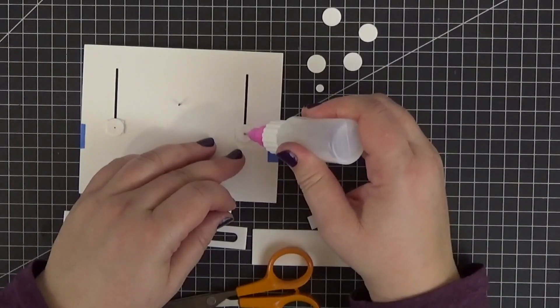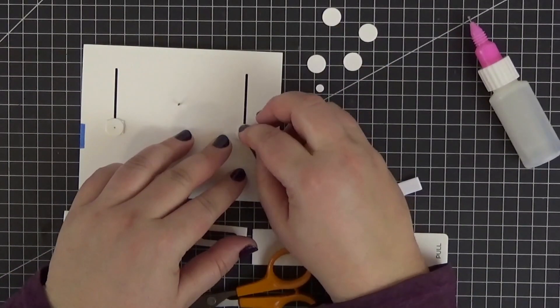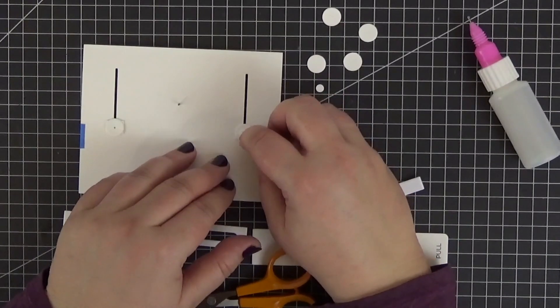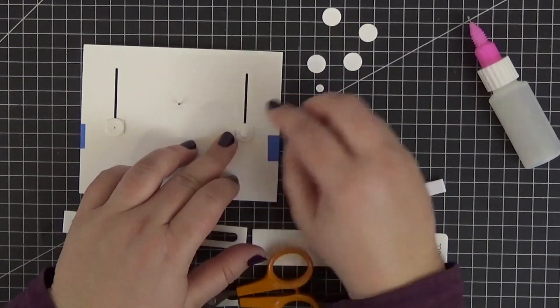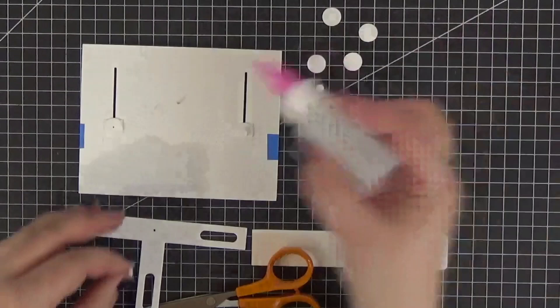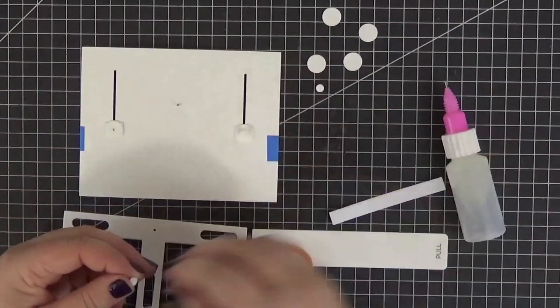Next, let's grab two of the spin and slide discs and a strong liquid adhesive to adhere them to the center of the circles. I marked them with a pen so that you can see them better on your screens.